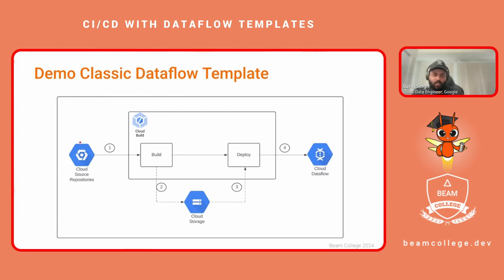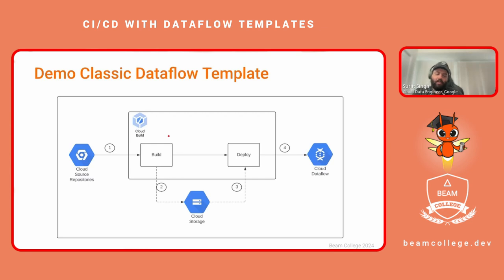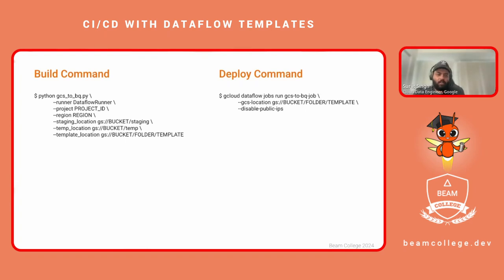We use Cloud Source Repository to check out our code, and you can integrate that with Cloud Build. Cloud Build can start building your application code either on a commit, manually, or when a tag is created. In Cloud Build, you define the steps needed to build your template — whether classic or flex. Since we're doing classic templates for this demo, I'll be building a template in Cloud Build using a YAML file with defined commands that will build the template and send the JSON-serialized file to a Cloud Storage bucket. From there, another task will start, which will use that file in GCS to deploy the Dataflow job.